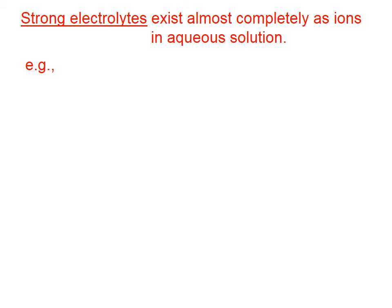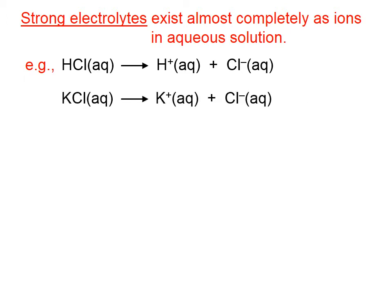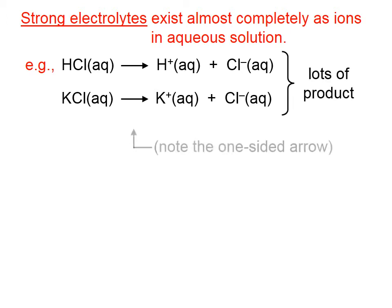Strong electrolytes exist almost completely as ions in aqueous solution. Here's an example of a strong electrolyte — hydrochloric acid. Here's another strong electrolyte: potassium chloride. When we put it into water, essentially all of the potassium ions end up floating around by themselves, and all the chloride ions end up floating around by themselves. That's what we mean by a strong electrolyte.